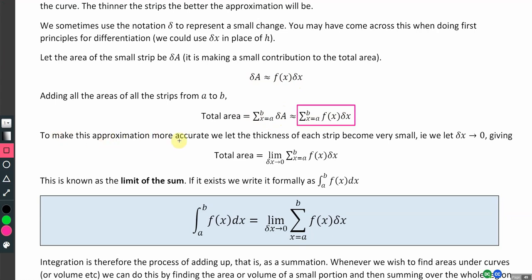To make this approximation more accurate, we let the thickness of each strip become very small. In other words, we use the limiting process. Let delta x tend towards 0, giving the total area the limit of that sum as delta x goes to a limit of 0. This is known as the limit of the sum. If it exists, we write it formally as an integral. So delta x becomes dx, and the capital sigma becomes the integral symbol.